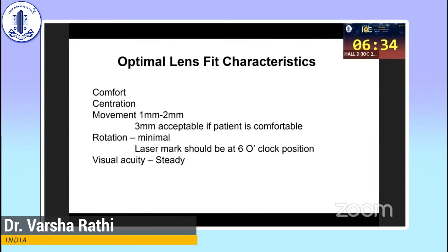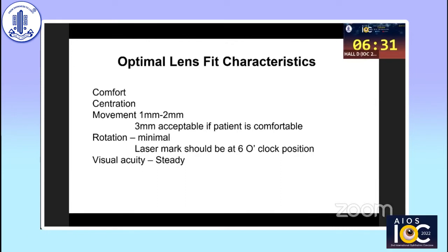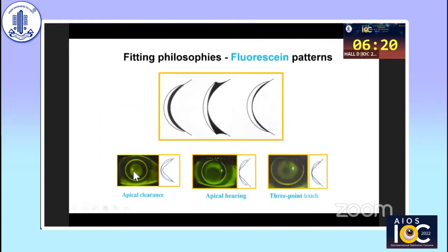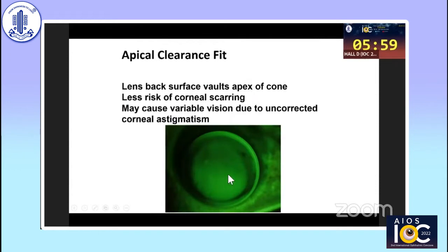Rotation of these lenses should be minimal and the laser mark should be at the six o'clock position. RGP contact lenses are the preferred lenses in keratoconus and any type of corneal ectasia. There are three fitting philosophies: apical clearance, where the lens is not touching the surface as seen with fluorescein; apical bearing; and three-point touch, where the lens touches at three points on the corneal surface. In apical clearance fit, the lens back surface clears the apex of the cone, so there is less risk of scarring, but vision may be variable due to uncorrected corneal astigmatism.